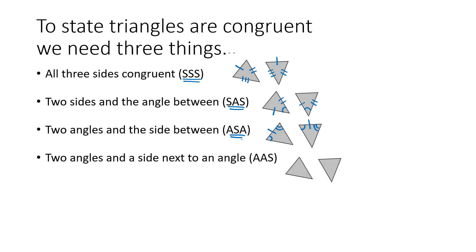The fourth and final option is if two angles are congruent and then the side next to them — not between them — is also congruent. We have an angle congruent to an angle, an angle congruent to another angle, but this time the side is on the edge rather than in between. We call this angle-angle-side, or AAS. If we have two angles and a non-included side, those two triangles have to be congruent.